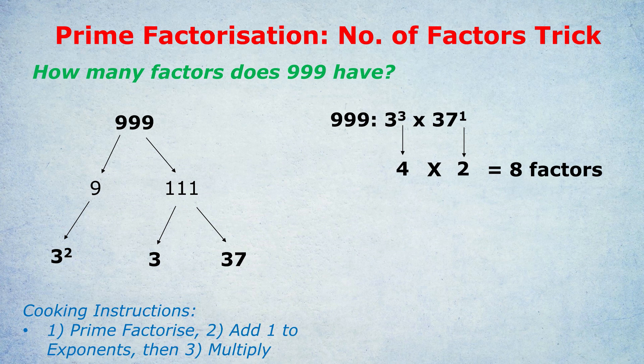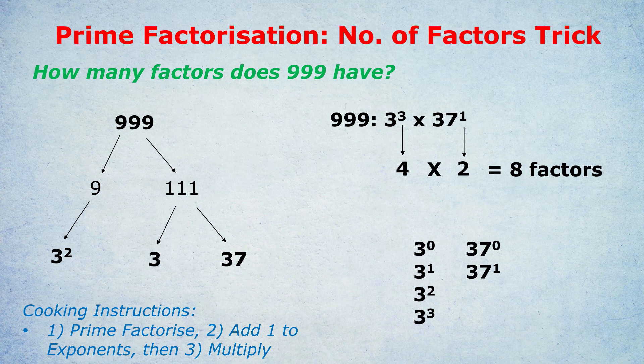You don't need to know the next bit, why it works. I'll quickly demonstrate for those who are curious. Basically, each of those numbers, 3 cubed and 37 to the 1, has one more iteration than you would believe. So 3 cubed could come in four different ways: 3^0, 3^1, 3^2, 3^3. The 0 adds 1 further away. 37 isn't just 37^1, it could be 37^0. Any combination of those four numbers on the left with those two numbers on the right will produce a unique factor of 999. And that's why we add 1 to the exponent and then multiply to find the number of factors. Again, you don't need to know why it works, but you do need to know the cooking instructions as I've written down below.